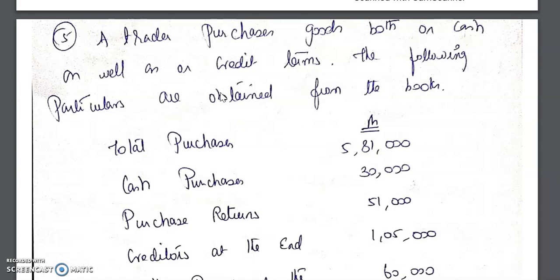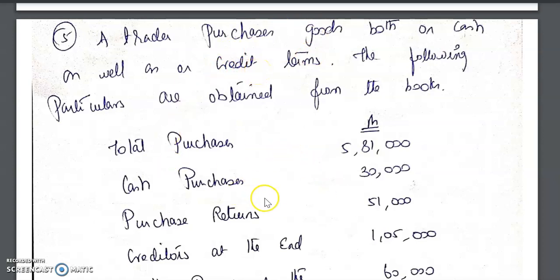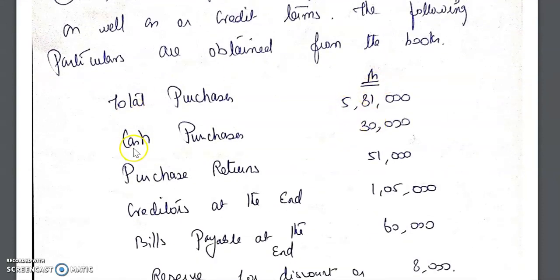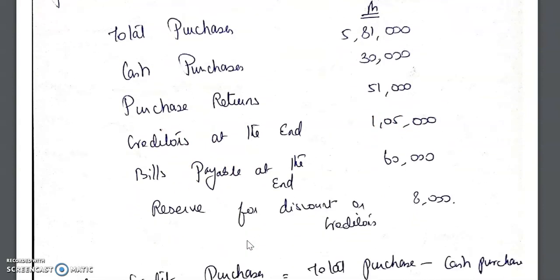Similarly, for credit purchases, we pay money to suppliers. So just as we calculate net credit sales for the debtor turnover ratio, here we have to consider net credit purchases. If cash purchases are not mentioned, take all purchases as credit. In this sum, a trader purchases goods both on cash and credit terms. Total purchases are 5 lakh 81 thousand, cash purchases 30,000, purchase returns 51,000, creditors at end 1 lakh 5,000, and bills payable at end 60,000.